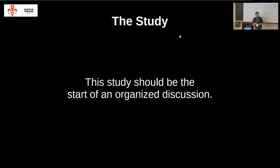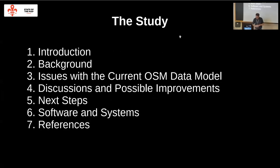This study should be the start of the discussion — the idea is to have something so we can say 'I disagree with Jochen on page 17, that's totally wrong, we have to do it differently.' It's important to have something to start the discussion from. The study has an introduction, background covering nodes and ways, defines some terms, and discusses the simple feature model — which we heard from Brendan is very important in the GIS world.